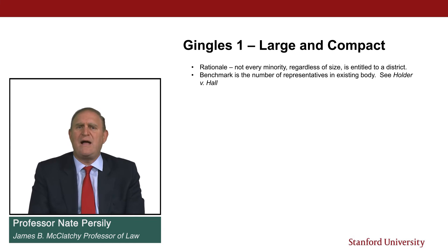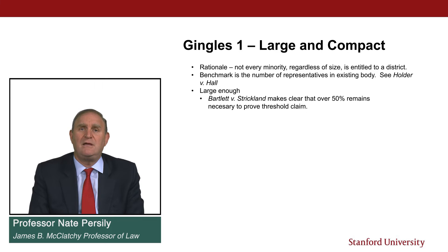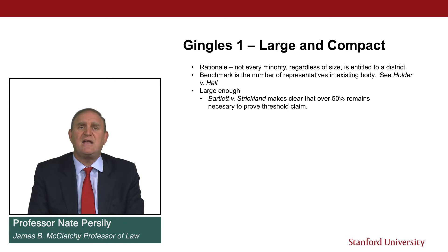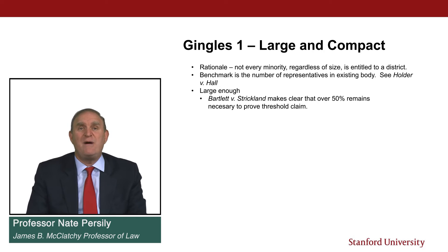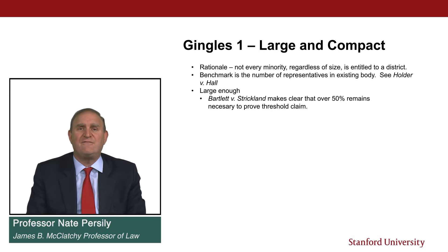What do we mean by 'large enough'? Bartlett v. Strickland makes clear that 50% means 50% — when we say majority-minority district, we mean majority-minority district. The population must be over 50% of a prospective district. You can't come into court and say we're 40% of a prospective district but some whites might cross over to help — that's not enough. You have to show you're over 50%.